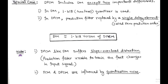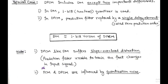We now discuss some points regarding pulse code modulation, delta modulation, and differential pulse code modulation. First, differential PCM, like delta modulation, suffers from slope overload distortion, because the prediction filter is unable to follow or track fast changes in the input signal. Second, both PCM and differential PCM are influenced by quantization noise, which is to be avoided using some modification scheme.